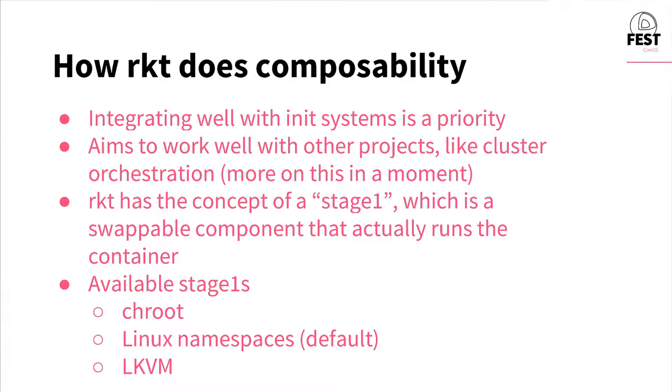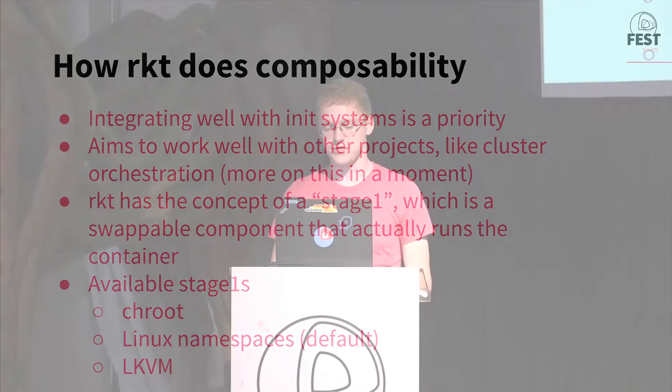Regarding composability, Rocket has a big focus on integrating really well with init systems. If you want to run your application and start up with a systemd unit, an upstart script, or whatever init system you're using, it's really trivial to do so in Rocket, because Rocket doesn't fork and doesn't call off to some daemon — the process you call to actually execute containers is the process the container runs in. It also aims to work well with other projects like container orchestration. A really big thing Rocket does is the concept of a stage one, which is a swappable component that actually runs the container. When you ask Rocket to run an Apache PHP app, it goes to one of these stage ones and says please run this for the user. Because this is a swappable component, you can have different implementations for how to actually run containers.